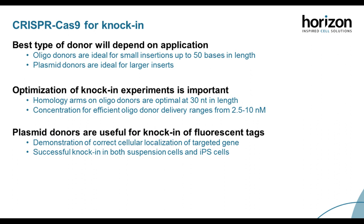When using CRISPR-Cas9 for knock-in, the type of donor oligo depends on the length of sequence you want to knock in. Single-stranded DNA donor oligos are best for insertions up to 50 bases in length, whereas plasmid donors are best for larger knock-ins. Optimization is always important, particularly in HDR experiments due to the lower efficiency. Both homology arm length and concentration need to be optimized. We demonstrated precise knock-in of GFP with correct localization in both K562 and iPS cells.